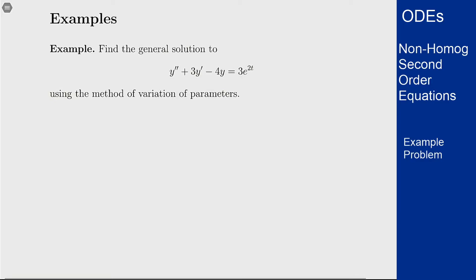In this example we're going to solve a second order differential equation using variation of parameters. We've solved the equation before but now we're going to solve it using this method. The equation is y double prime plus 3y prime minus 4y equals 3e to the 2t.